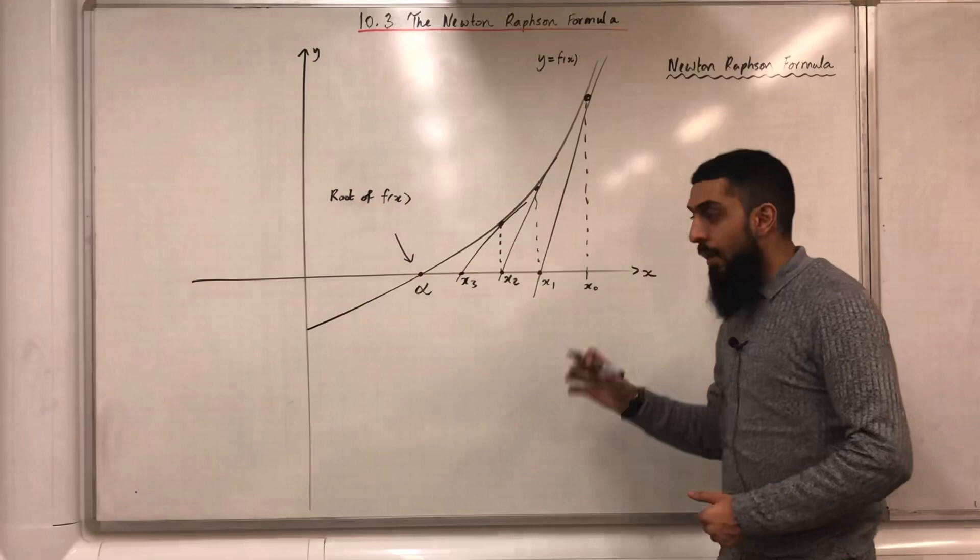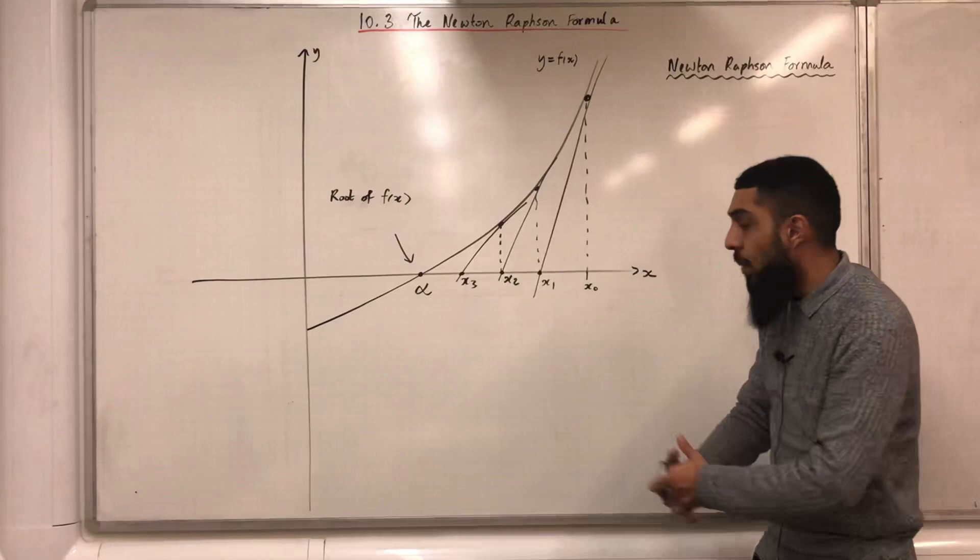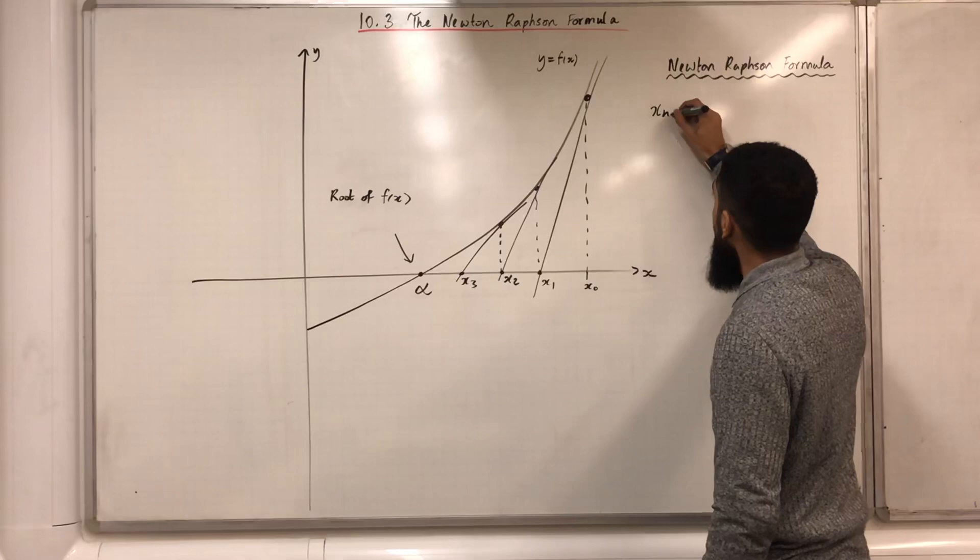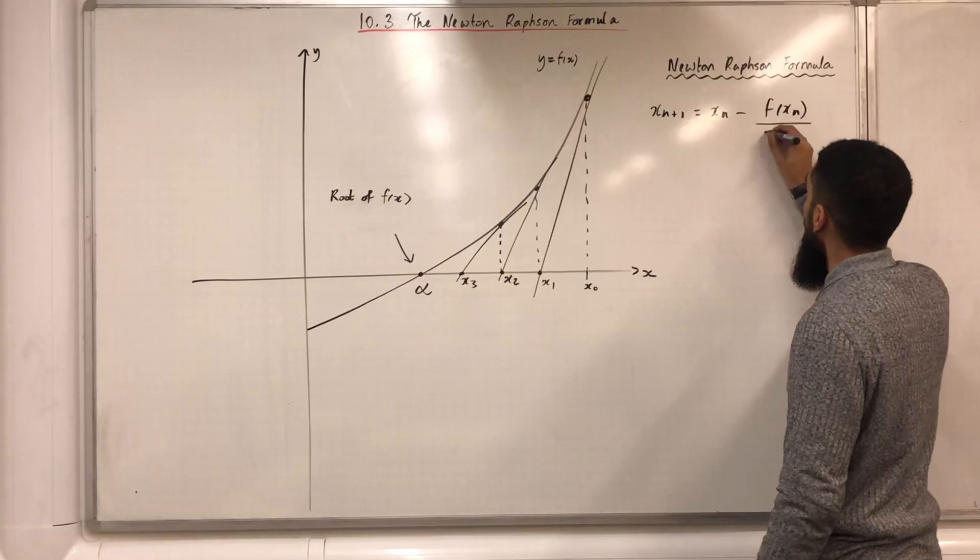How do I work out x1, x2, x3, and so on? I use something called the Newton-Raphson formula. The Newton-Raphson formula is the following recurrence relation: x(n+1) equals xn minus f(xn) divided by f'(xn).